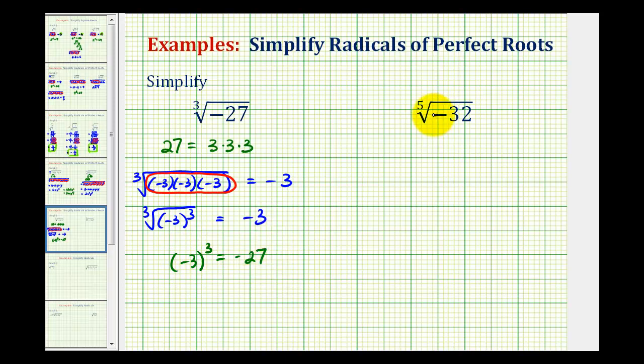So for the fifth root of negative 32, again ignoring the negative sign for a moment, if we wrote the prime factorization of 32, it's equal to five factors of two. And if we made these two's negative, the product would be negative 32.